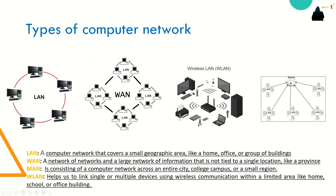Types of computer networks are very important. We have LAN, WAN, MAN, and WLAN. A LAN is a network infrastructure that provides access to users and end devices in a small geographical area, like your home or a small business network owned by an individual, IT department, or business. A WAN is a network infrastructure that provides access to other networks over a wide geographical area, typically owned and managed by telecommunications services, connecting LANs together across a city, country, or state.